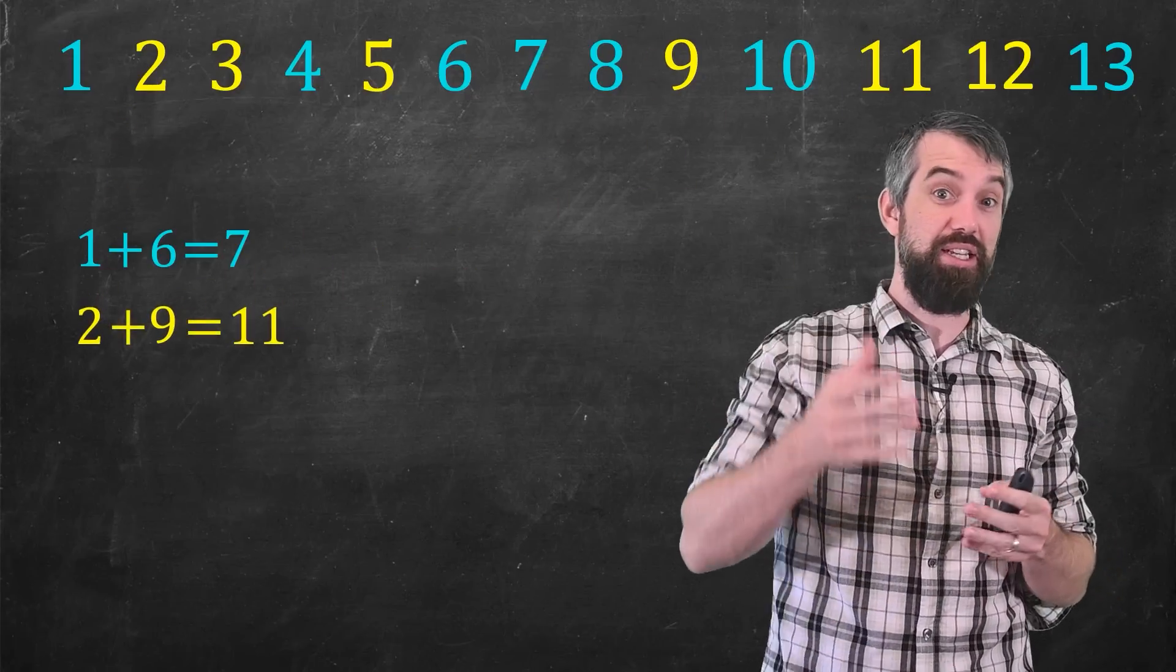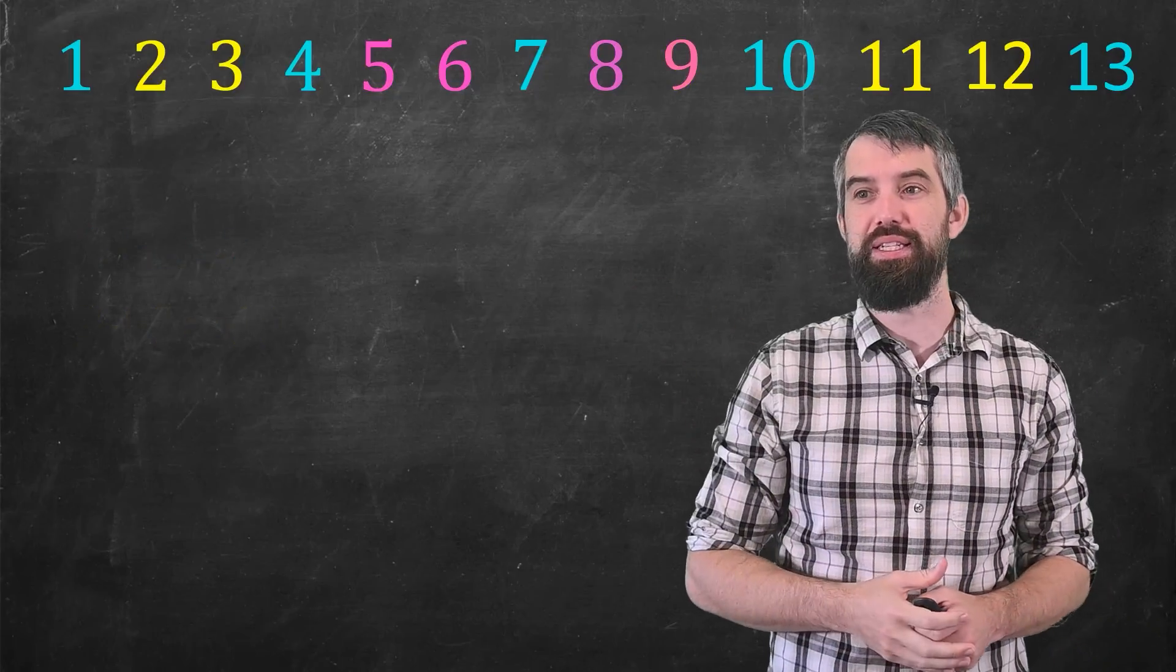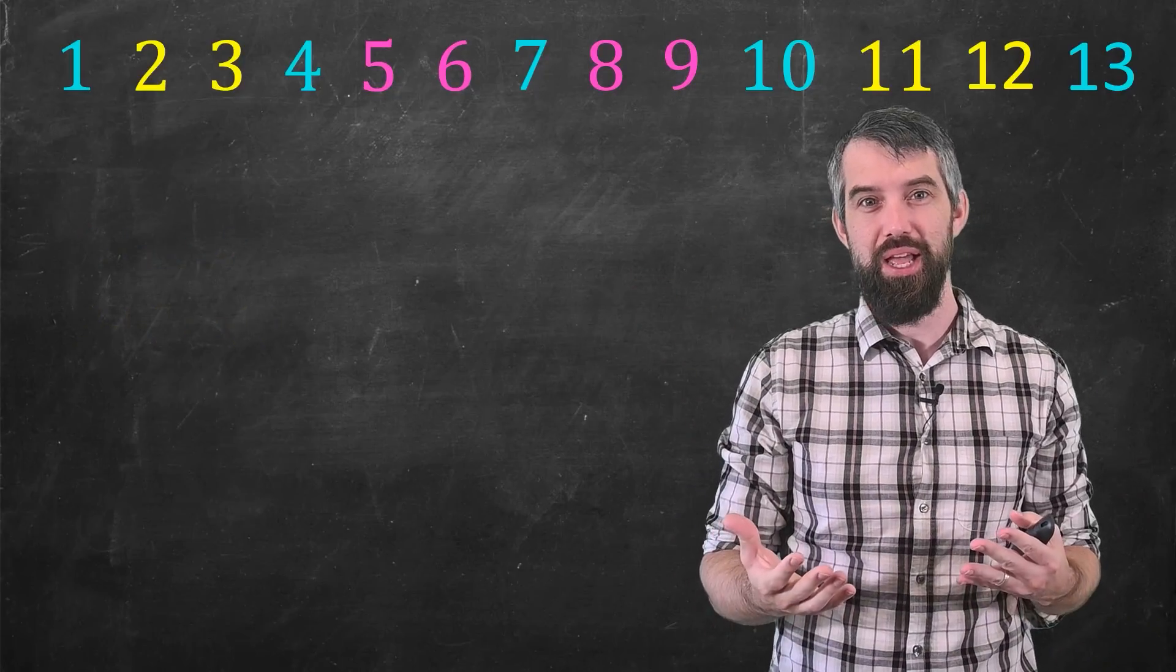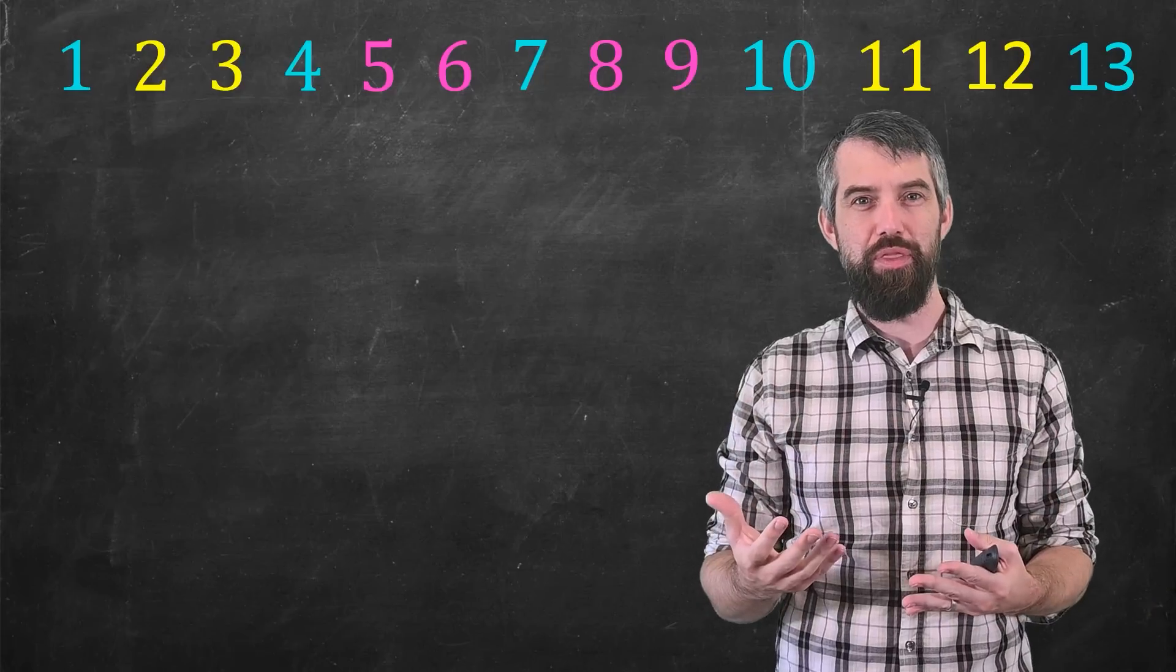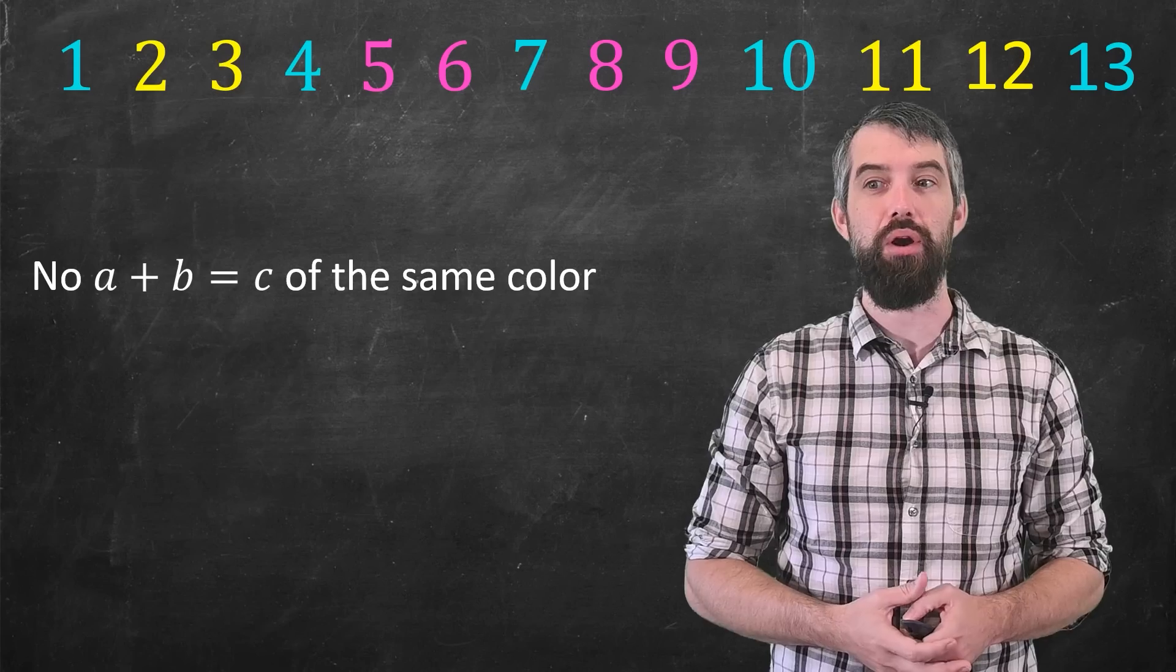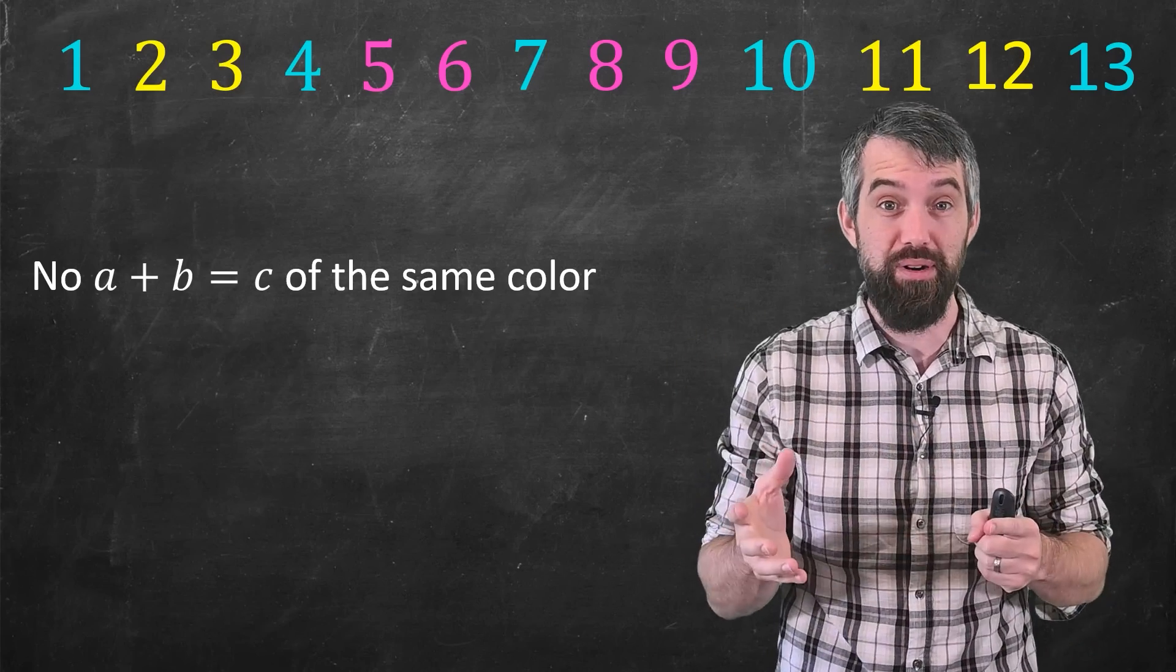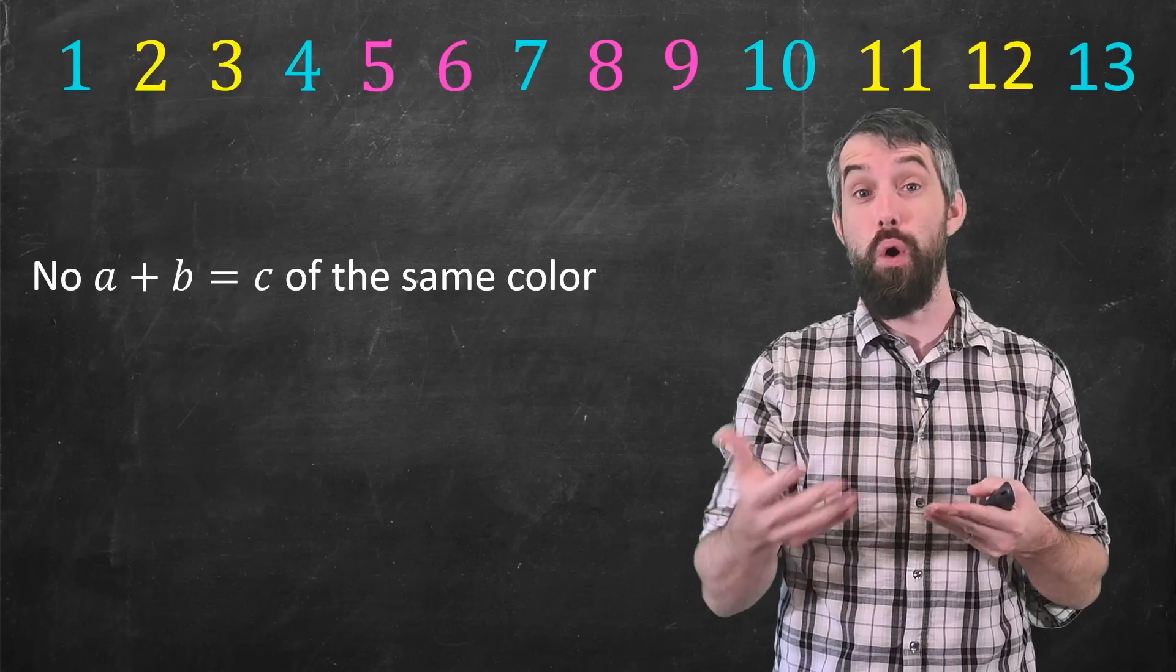Or if I take, say, 2 plus 9 equal to 11. However, if instead of using two colors, I instead replaced it with three colors, then I can find a way where there is no A plus B equal to C that's all the same color. You can check. If you go through here, you'll never find three numbers for A plus B equal to C that are all the same color.